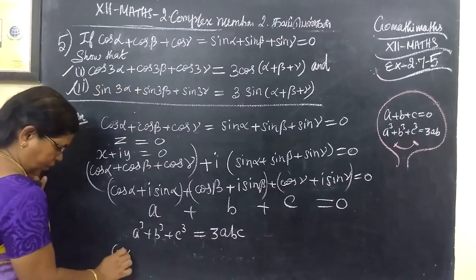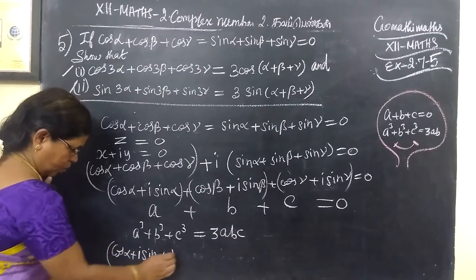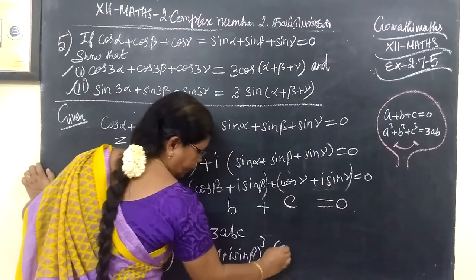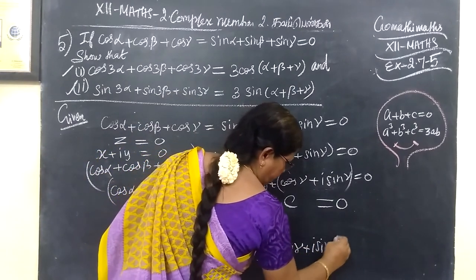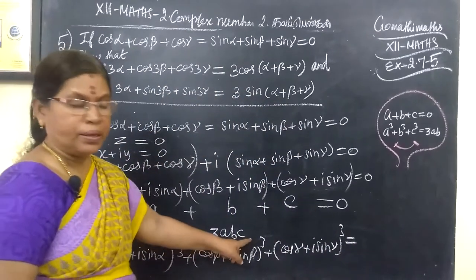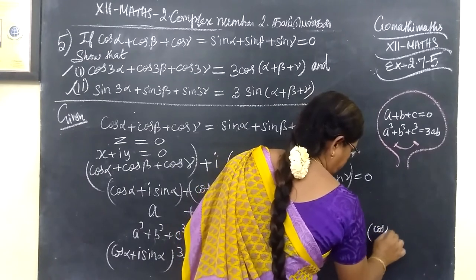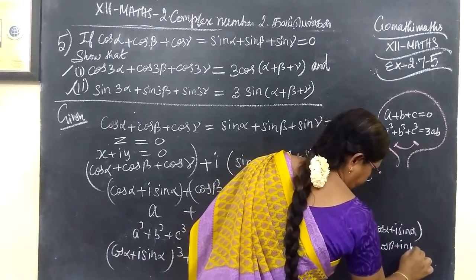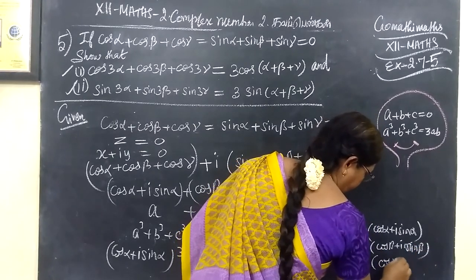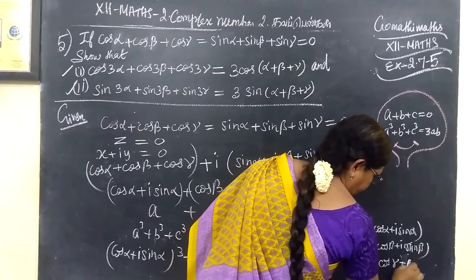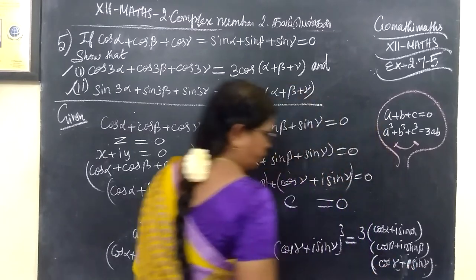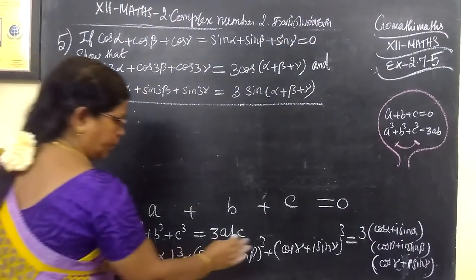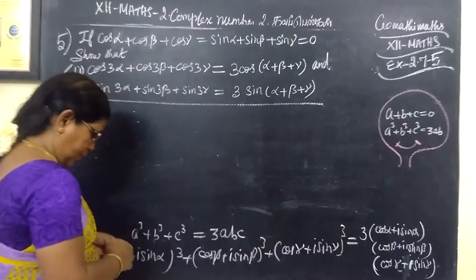So (cos α + i sin α)³ + (cos β + i sin β)³ + (cos γ + i sin γ)³ = 3abc, where 3abc = 3 × (cos α + i sin α)(cos β + i sin β)(cos γ + i sin γ).